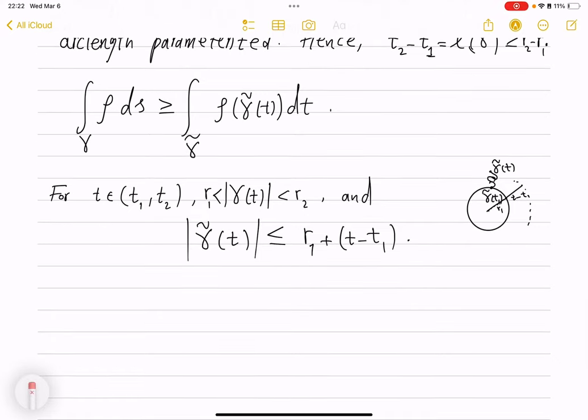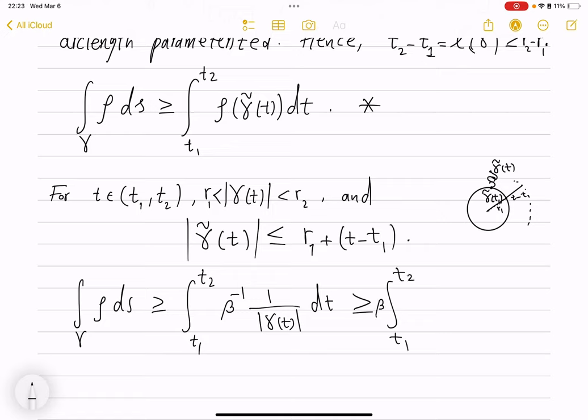So, how does this help us? So, from this star, we see that ρ ds will be bigger than integral over gamma tilde. Well, this is from t1 to t2. And then ρ has this formula, beta inverse, 1 over absolute value of gamma of t, dt. Now, gamma t has that upper bound. It goes into the denominator, so direction changes. So, this will be from t1 to t2. This beta inverse is just a number we put outside. And then here we put dt. And then this will be r1 plus t minus t1. And here goes 1.